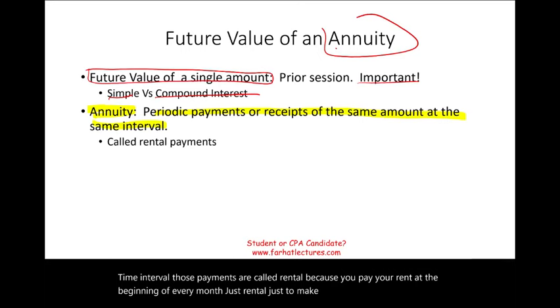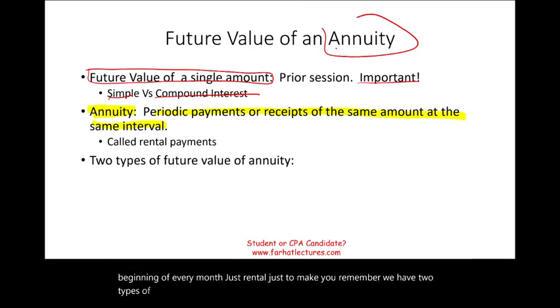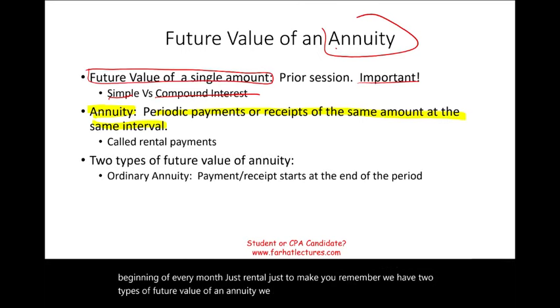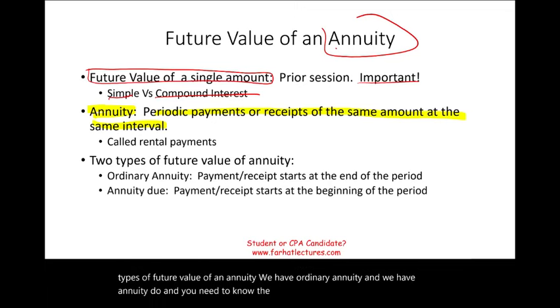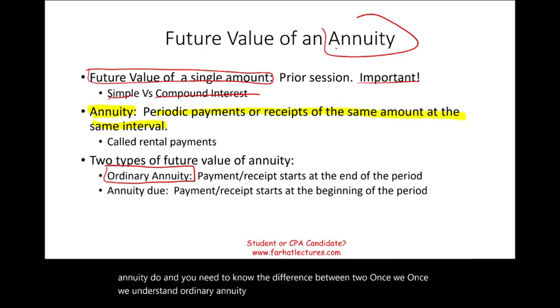We have two types of future value of an annuity: ordinary annuity and annuity due. You need to know the difference between the two. Once we understand ordinary annuity, you'll be able to understand annuity due.